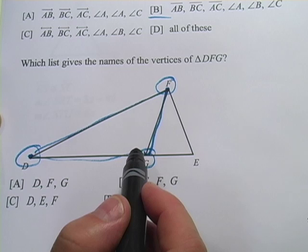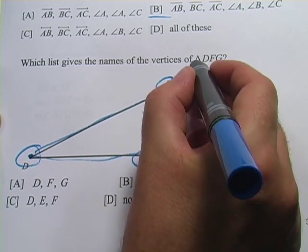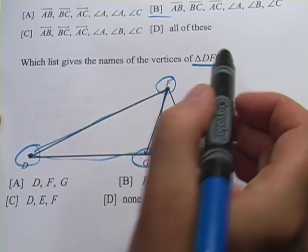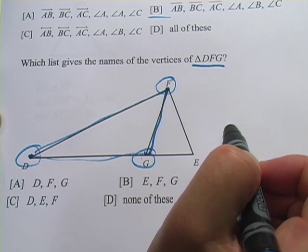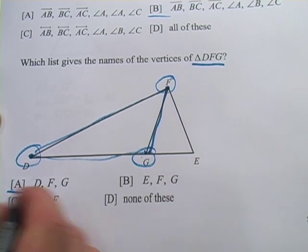And you probably wouldn't even need the diagram to figure that out because a triangle is always written this way with the names of the vertices. So the correct answer in this one would be A,